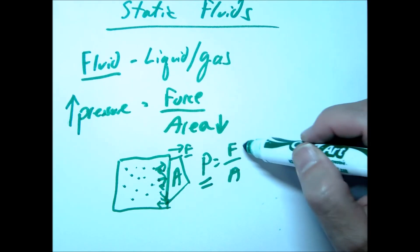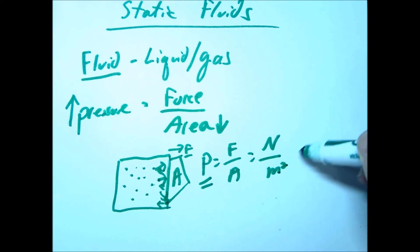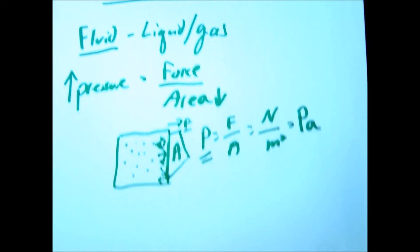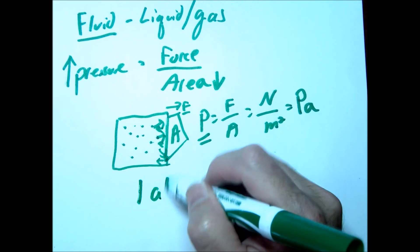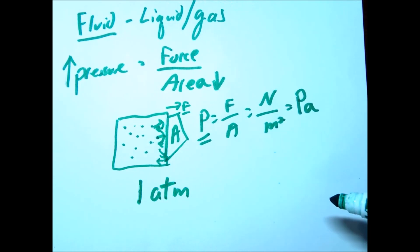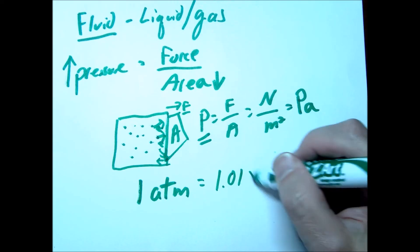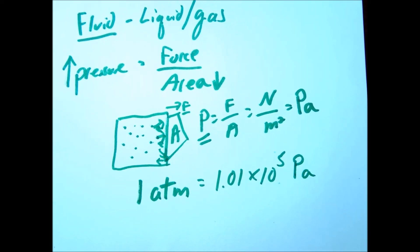Notice the units: pressure is measured in Newtons per meter squared, which we call a Pascal. Another unit we use a lot is the atmosphere, abbreviated ATM, where one atmosphere equals 1.01 times 10 to the fifth Pascals.